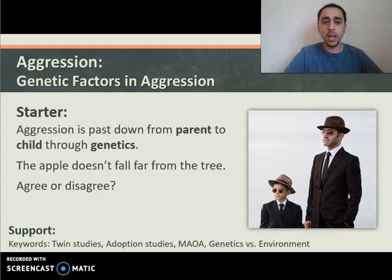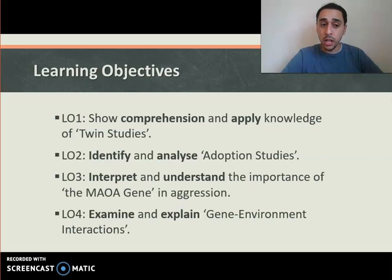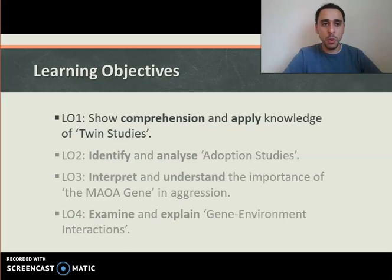Here are our learning objectives for today. Number one: show comprehension and apply knowledge of twin studies. Learning objective two: identify and analyse adoption studies. Learning objective three: interpret and understand the importance of the MAOA gene in aggression. And number four: examine and explain gene-environment interactions — how genes and environment may interact with each other.